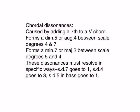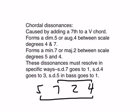Now let's talk about chordal dissonances. This is caused by adding the seventh to a five chord. So a five chord normally has scale degrees five, seven, and two. When we add scale degree four, it forms a tritone or diminished fifth between these voices, and it forms a minor seventh between these voices.